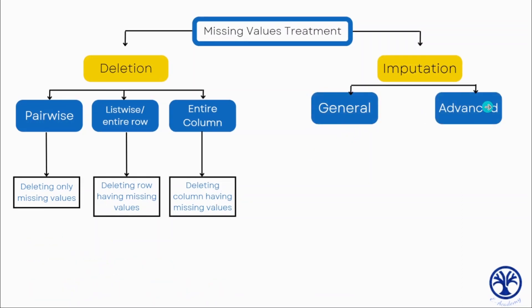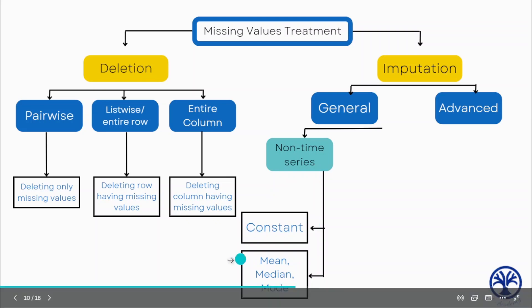In the general approach, we can divide it based on the data we have. If we are not dealing with time series data, we can impute with constant or manual filling. The second option is mean imputing, median imputing, or filling with the most frequent data.